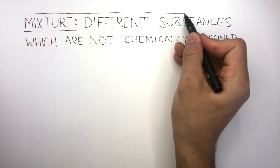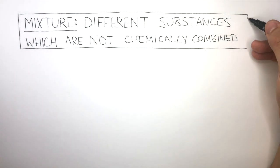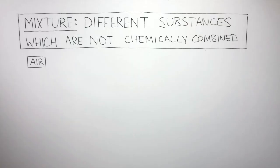For example, a mixture which everyone uses every day without even thinking about it is air. Air is a mixture because it contains different substances which are not chemically combined, such as oxygen, carbon dioxide, argon, and nitrogen.